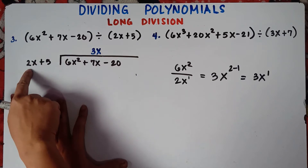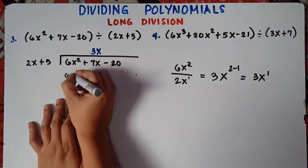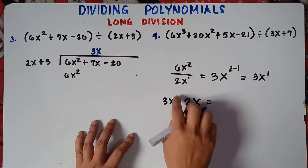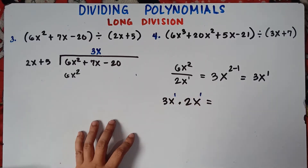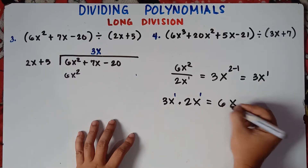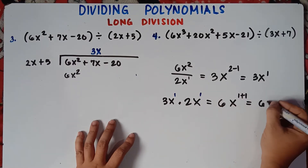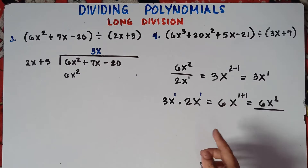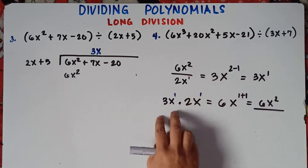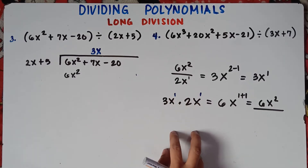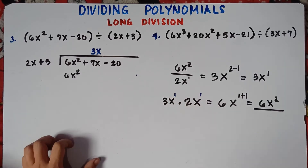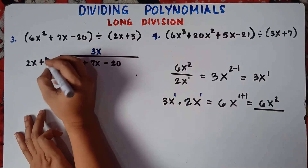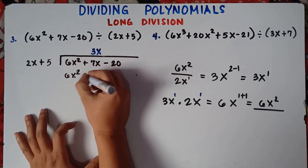And then you multiply. So 3x times 2x — when you multiply, you add the exponent. Understood that there's 1 here. So 3 times 2 is 6, and x times x is x raised to the power of 1 plus 1, so that would be 6x squared. When you divide, you subtract the exponent of the variables; when you multiply, you add the exponent of the variables. Then 3x times 5 is positive 15x.